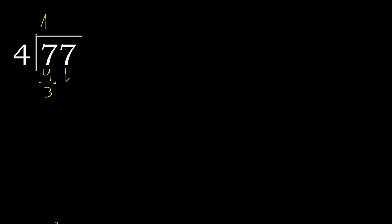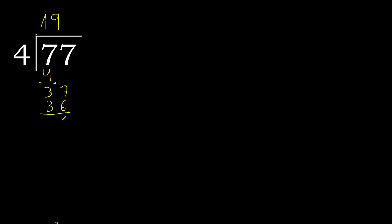4 is not greater, subtract. 7 minus 4 is 3. Next: 37. 4 multiply by 9 is 36. Subtract is 1.